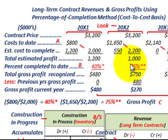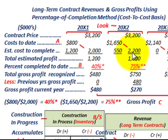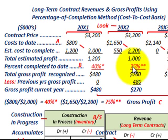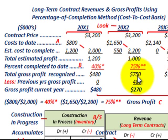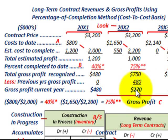The percent completed to date for 20x2 is based on cost-to-date of $1,650 divided by total estimated cost of $2,200, which gives us 75%. So the total gross profit recognized is $1,000 times 75% equals $750. We subtract the previous year's gross profit of $480, giving us a gross profit for the current year of $270.